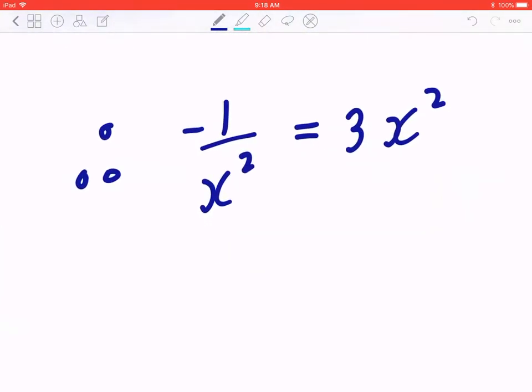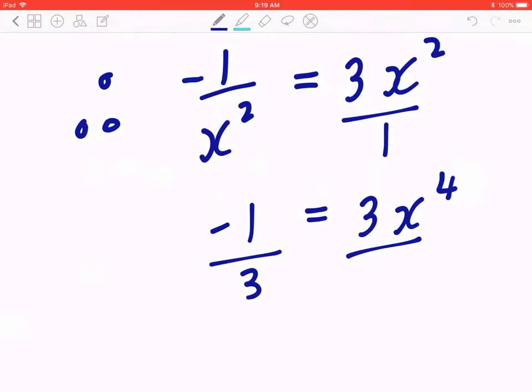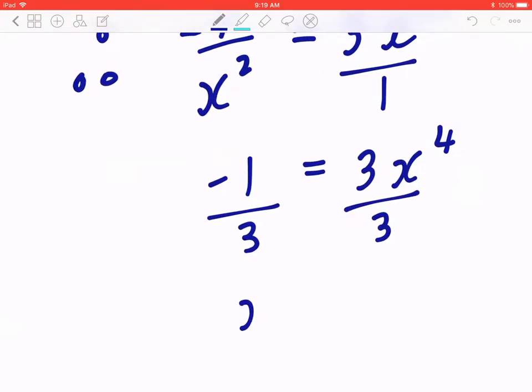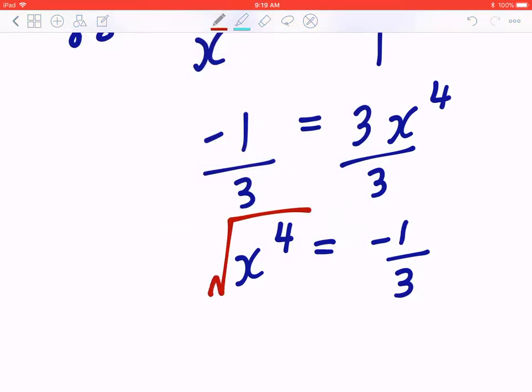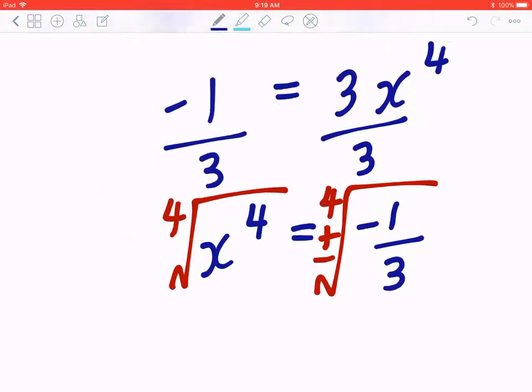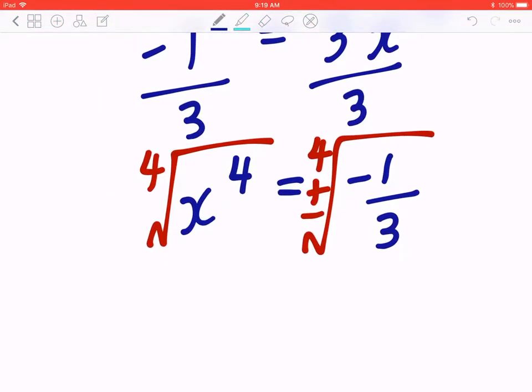You can make the right-hand side divided by 1, so it looks like a fraction. You can cross multiply. 1 times negative 1 is going to be negative 1. 3x squared times x squared is going to be 3x to the power of 4. The opposite of multiplying by 3 is to divide by 3, or you can write x to the 4 on the left-hand side, negative 1 over 3 on the right-hand side. The opposite of taking the power of 4 is to find the fourth root. And there are two cases, plus and minus. However, you cannot take the fourth root of a negative number.